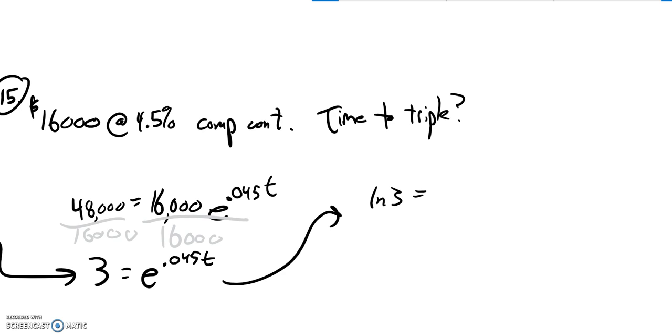That's just a number. I can shove it in my calculator. 0.045 T. I want to know what T is. So now I'm going to divide both sides by that 0.045. And I get T equals natural log of 3 divided by 0.045.